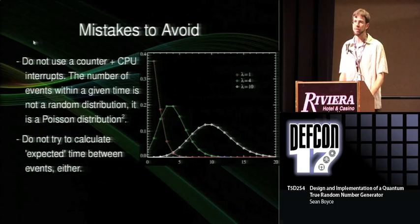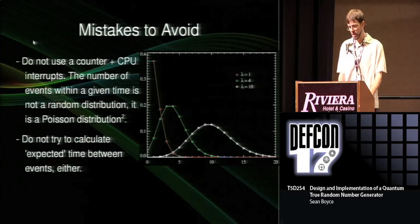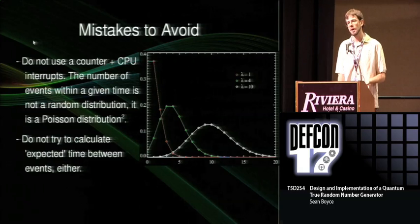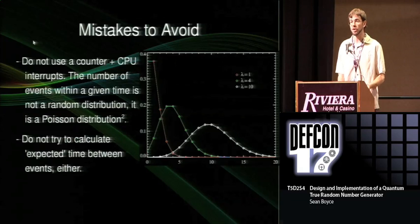The last thing you should not try to do is calculate the expected time between particle detection events, because it's going to vary over time, and you don't know exactly how many atoms there are, and you don't know your detector efficiency with absolute precision. So not only will you have a bias, you will no longer know what it is.